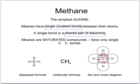The simplest of the alkanes is methane. It's only got one carbon, and it's got four hydrogens around it. Carbons always make four bonds, and hydrogens always make one bond. They've got single covalent bonds, and so between two carbon atoms, there's only a single bond in between.